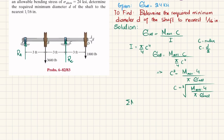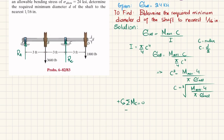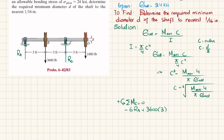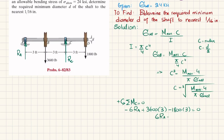The first equilibrium equation: sum of all moments about point C equals zero, taking counterclockwise as positive. About C: R_A times its perpendicular distance of 6 ft is clockwise, so −6·R_A. The 3600-pound load at perpendicular distance 3 ft is counterclockwise, so +3600×3. The 1800-pound load at perpendicular distance 3 ft is clockwise, so −1800×3 = 0. Solving: 6·R_A = 5400, giving R_A = 900 pounds.